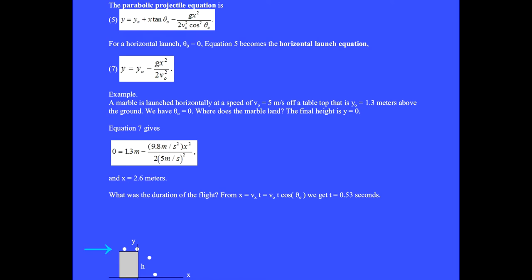In this example, a marble rolls off a table and onto the floor. Initially, the marble has only an x component of its velocity. The y component of velocity is 0. A marble is launched horizontally at a speed of v₀ equals 5 meters per second off a tabletop that is 1.3 meters above the ground.